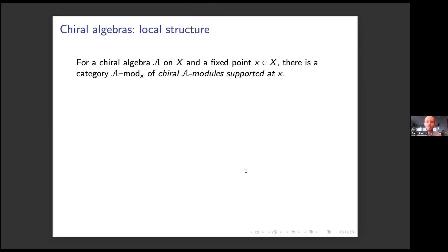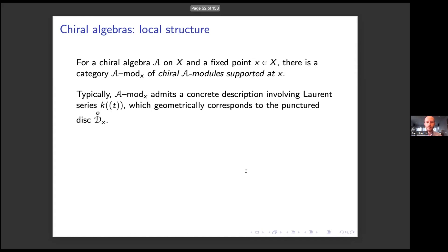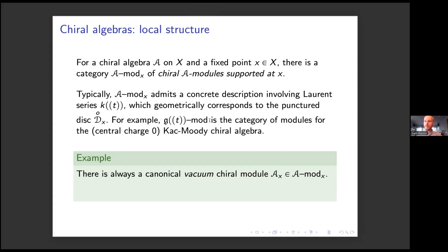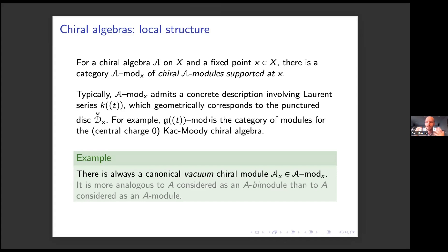For a chiral algebra A on this curve X and a fixed marked point on the curve, there's a category attached to this, which is called the category of chiral A-modules supported at the point. Typically this thing admits a concrete description involving Laurent series — it geometrically corresponds to having something to do with a formal punctured disk around this point. For instance, if I take the Kac-Moody chiral algebra, I'm going to get modules over G tensor with Laurent series. There's always a canonical module inside of this category called the vacuum module at the point. This module is kind of like a small module in some sense — it's much more like A as an A-bimodule than A as a module over itself.